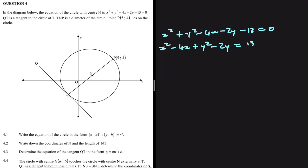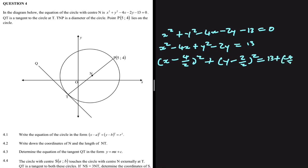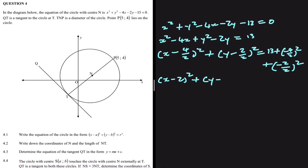The next step is to complete the square. We have (x - 4/2)² + (y - 2/2)² equals 13 plus (-4/2)² plus (-2/2)², which gives us (x - 2)² + (y - 1)² = 18. That is the equation of the circle. Let's do 4.2.